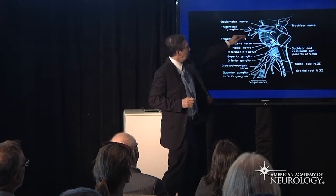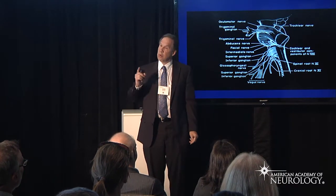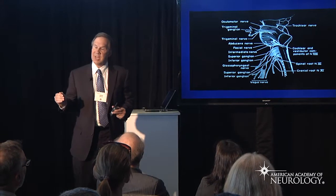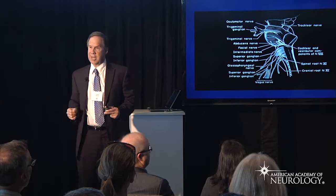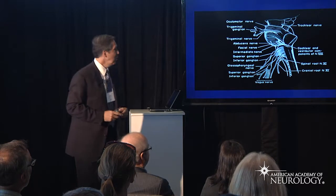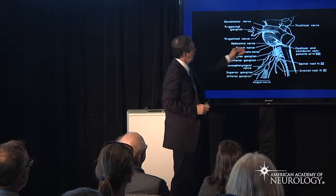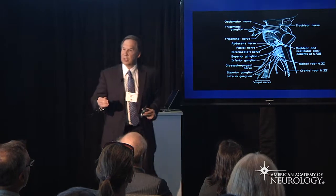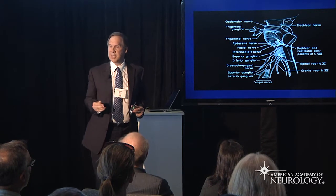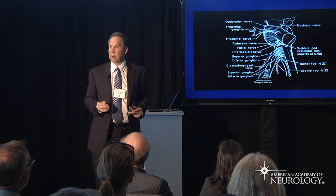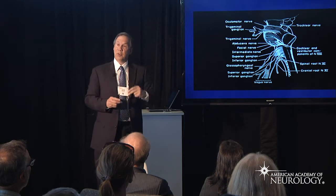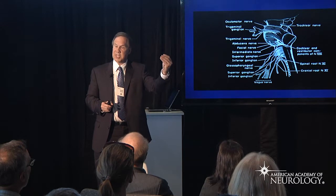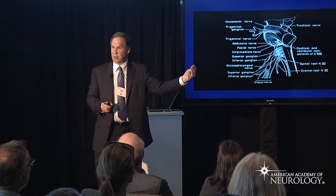When we move up to the pons, there are 4 cranial nerves that exit the pons: 5, 6, 7, and 8. When we go to the midbrain, we said we had 4 bumps. At the level of the inferior colliculus — an important way station for hearing — exits the 4th cranial nerve. At the level of the upper bumps, the superior colliculus — an important way station for vision — exits the 3rd nerve.